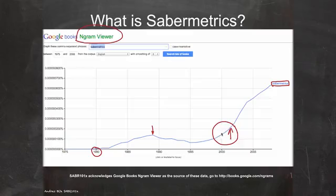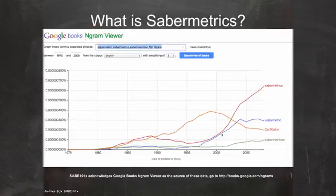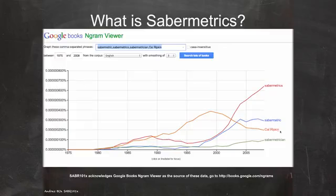Another interesting look at the Ngram Viewer compares the words 'sabermetrics,' 'sabermetric,' and 'sabermetrician,' with Cal Ripken also added. You can see the increasing usage of 'sabermetrician' and the adjective 'sabermetric,' and it's also interesting to think about how Cal Ripken's name has been used in books over time and where his peak might have been.